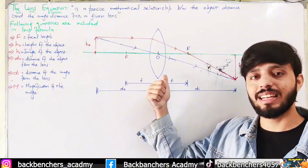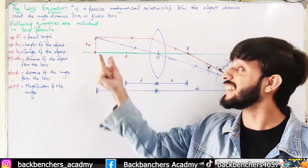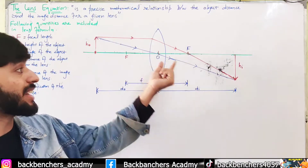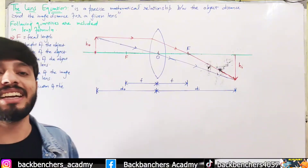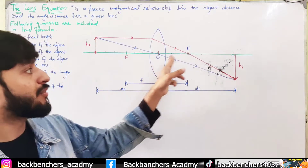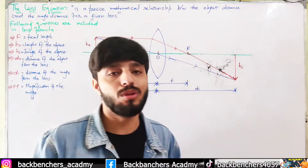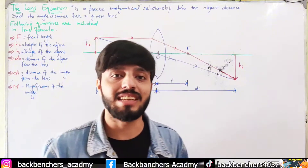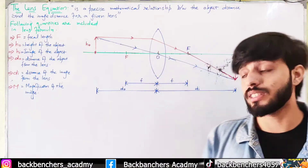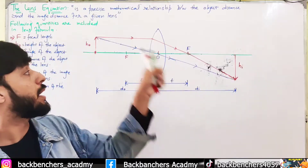Here we will take a convex lens and place an object on the left side. The question is: if I place an object here, where will I get the image? How far will this image be from the optical center? One method is by using a ray diagram — we can identify how far the image is from the optical center. But this method is not convenient because it is time-consuming. That's why we are looking for an equation to easily find how far the image is and how much it is magnified compared to the object.